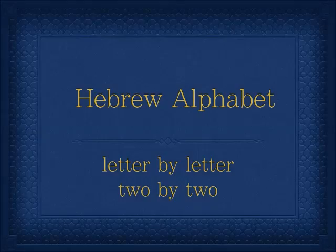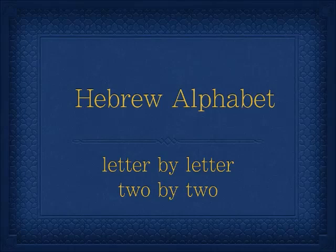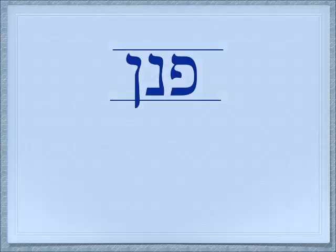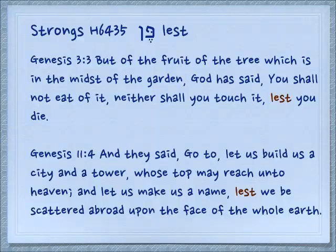Shalom. Today we're going to cover another pair of letters in the Aleph Bet with all their cognates, the words that go with them. Today we're doing Pe and Nun, and you should remember that the final Nun has a different form than the Nun at the beginning or the middle of a word.